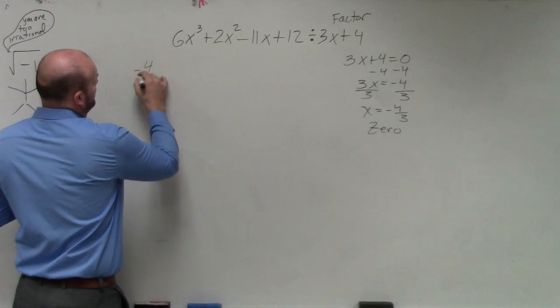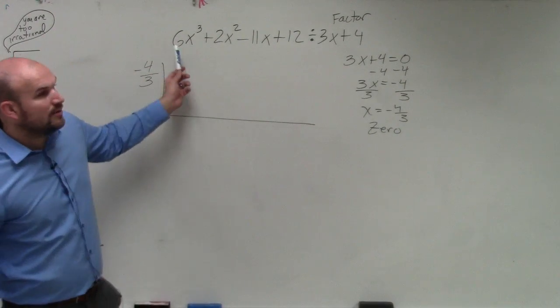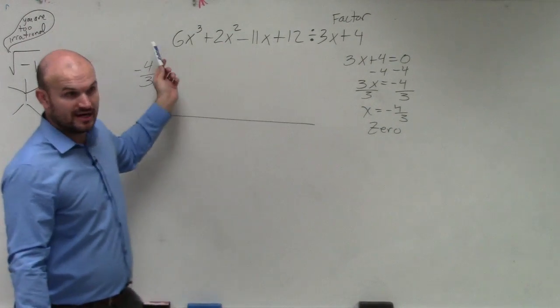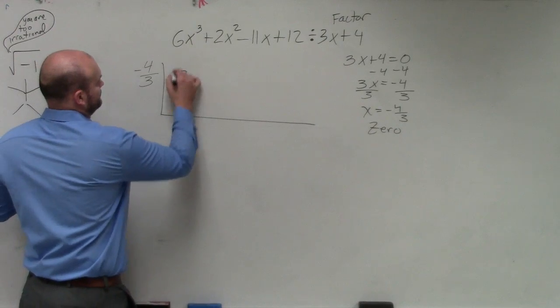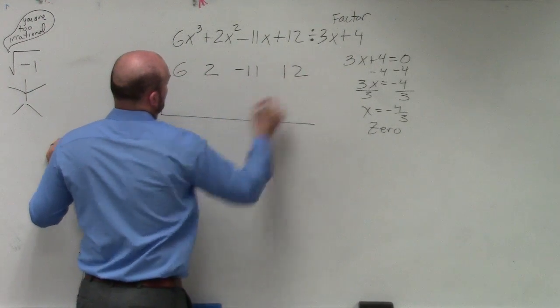So I have negative 4 thirds. Then I want to make sure I take the coefficients, make sure it's in standard form, and I'm not missing any terms. I have all my terms, so that's good. So I write 6, 2, negative 11, and 12.